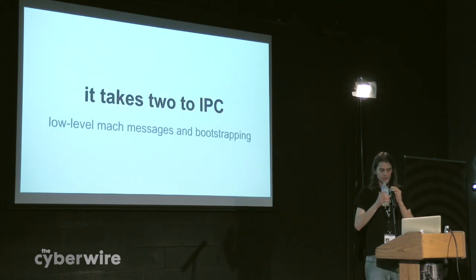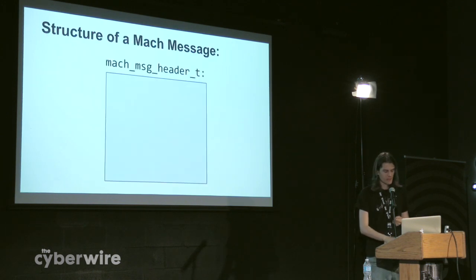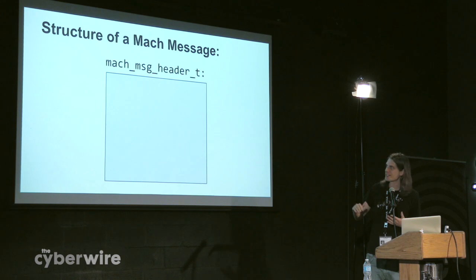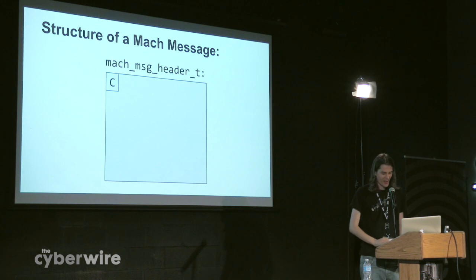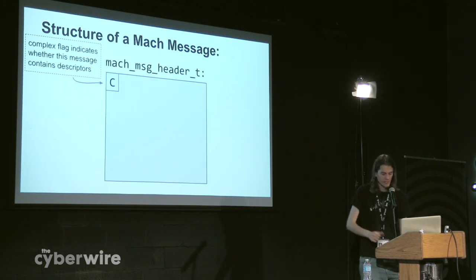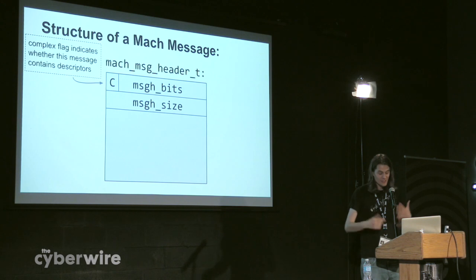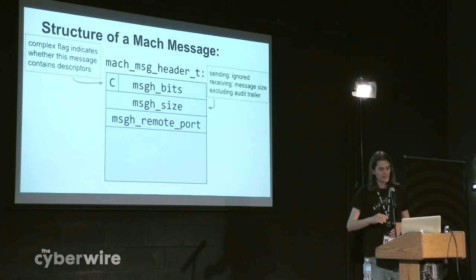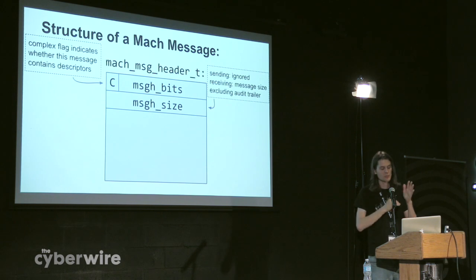Let's briefly look at the low-level Mach message fundamentals that underlie all of this stuff. What actually is a Mach message? We're going to look at the header and every field, because it's really important when looking at this stuff in IDA to be able to see what's actually going on. Every Mach message begins with this header which has six fields. The most significant bit of the first field tells us: is this a complex Mach message? Then it has some complicated flags. It then tells us the size of the message.